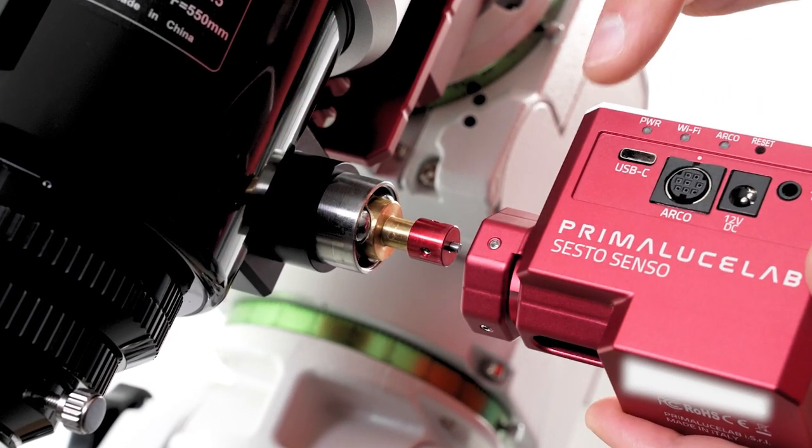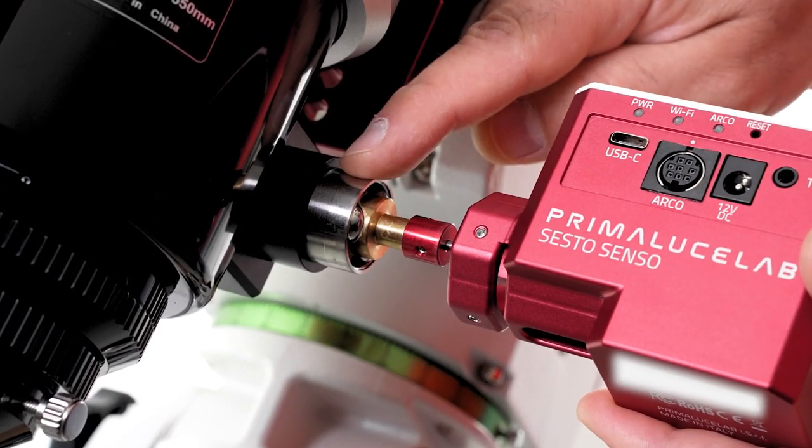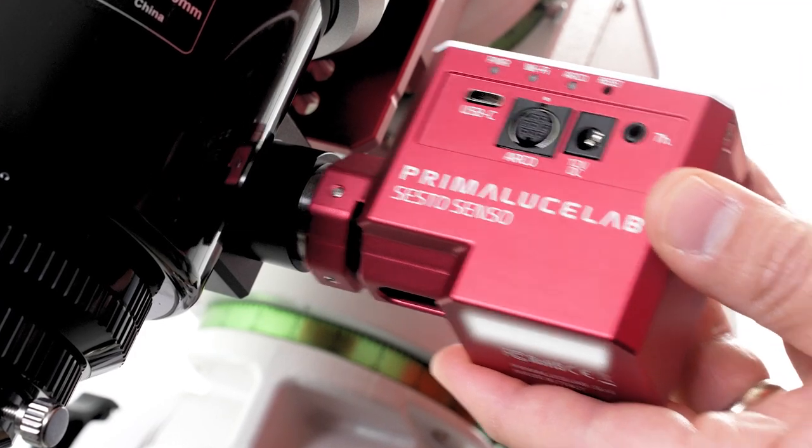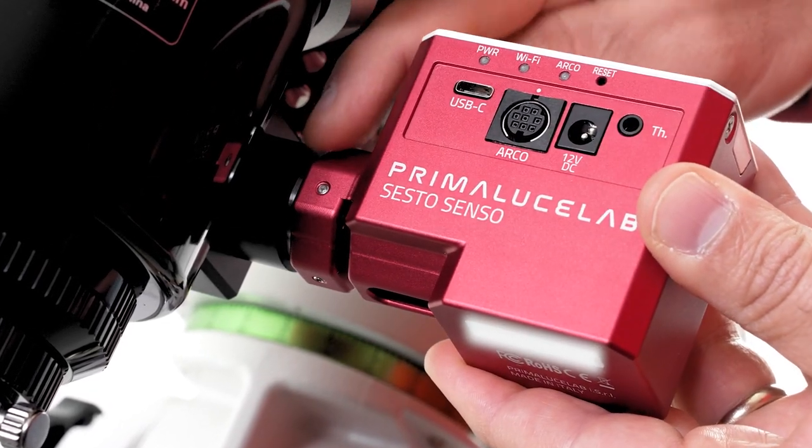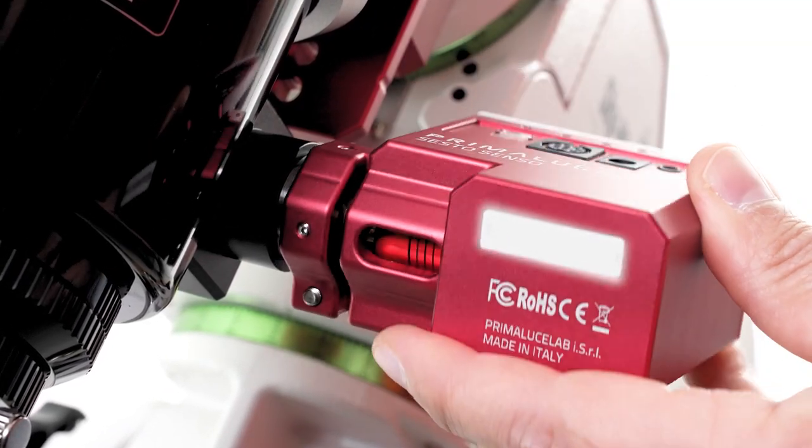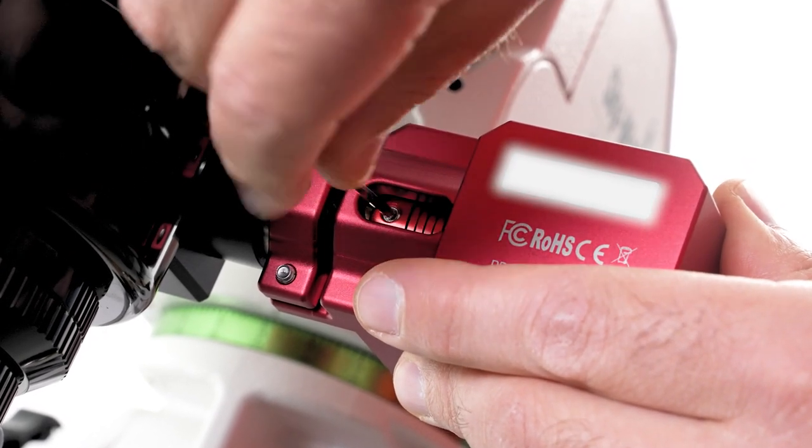Next, you can directly connect the Sesto Senso focusing motor to your focuser. Slide it on until it stops and the self-centering clamp covers the 25mm shaft.